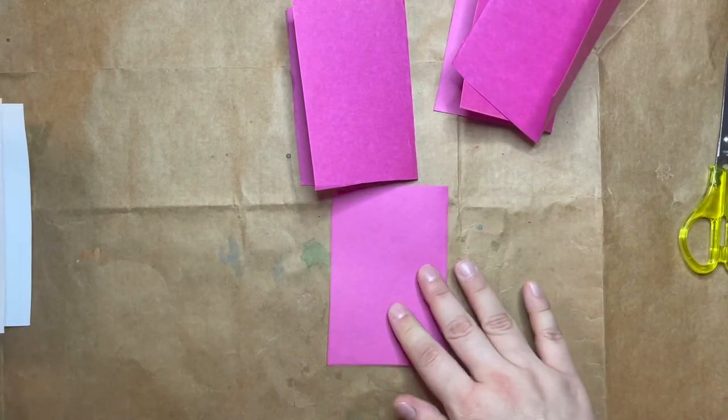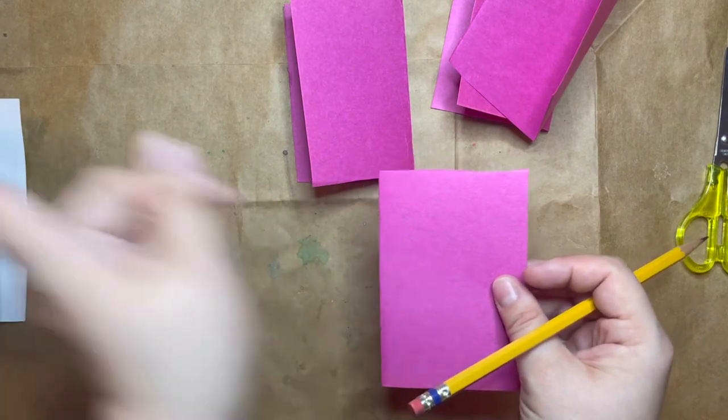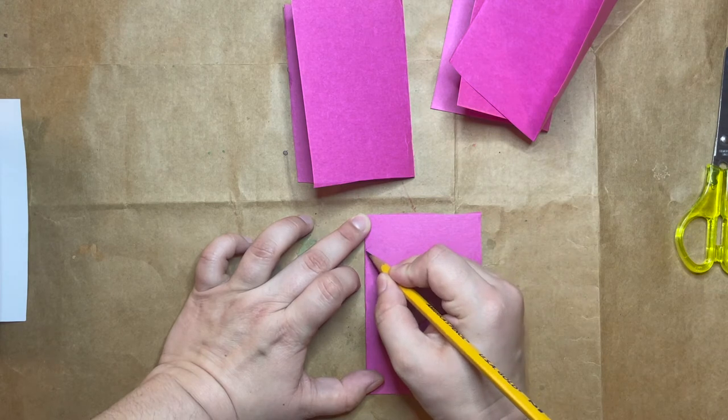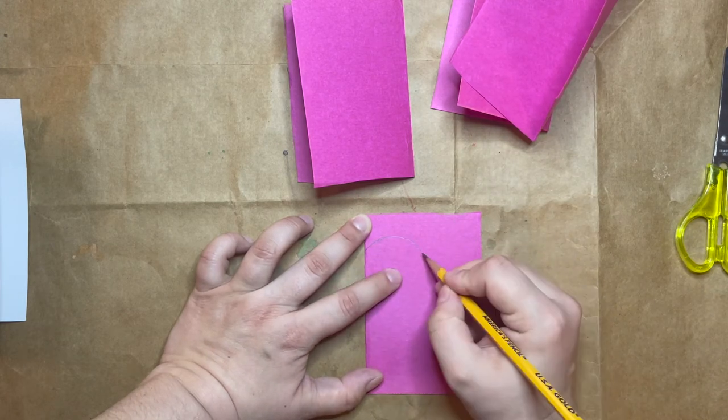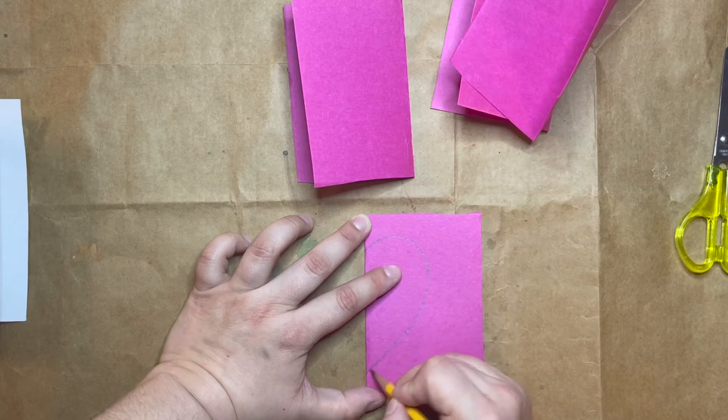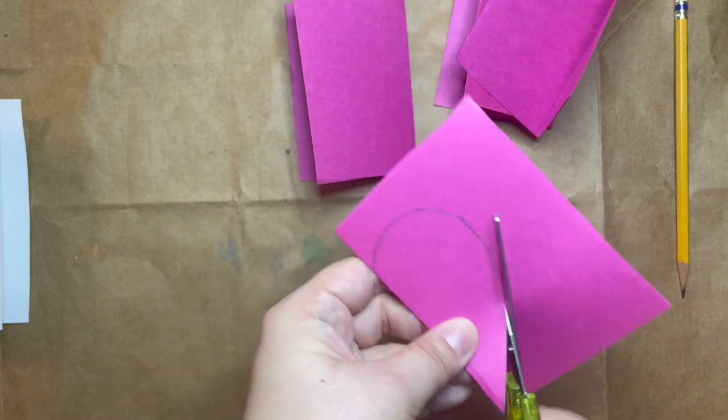Then I'll use my pencil. Since I'm right-handed, I like to have my folded edge pointing towards my left. And then I'm going to sketch out a heart. So I'll sketch out the heart shape that I want, and then I'm going to use my scissors and cut out this half of a heart shape.